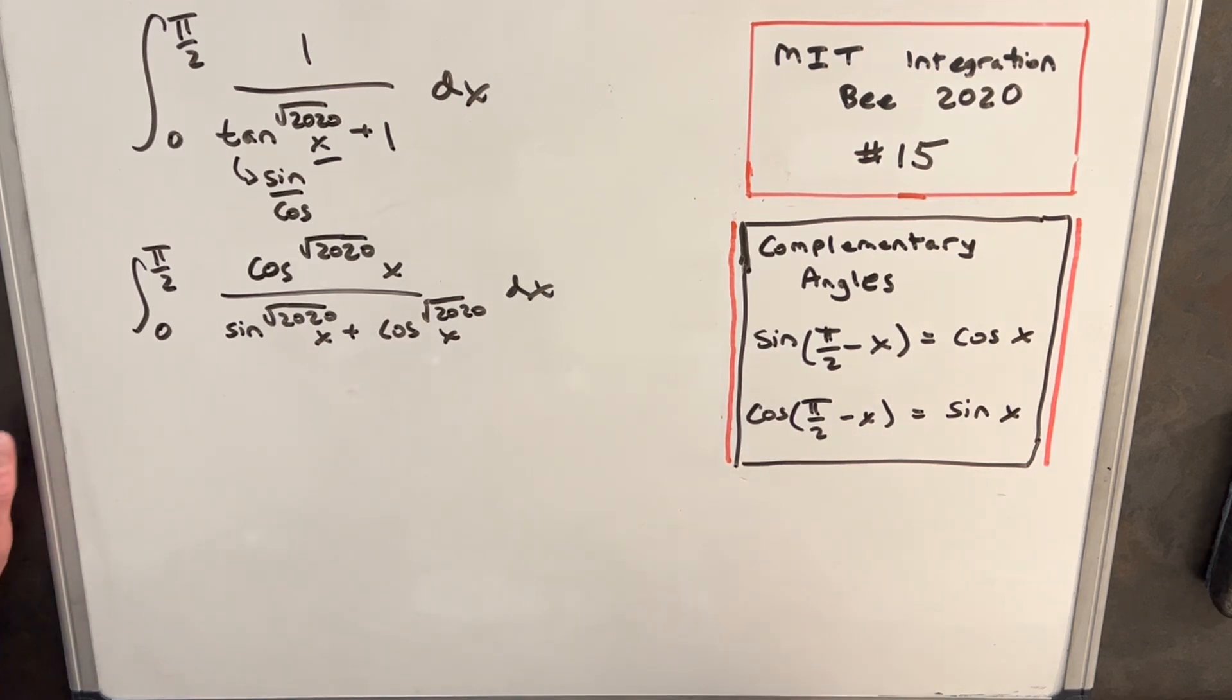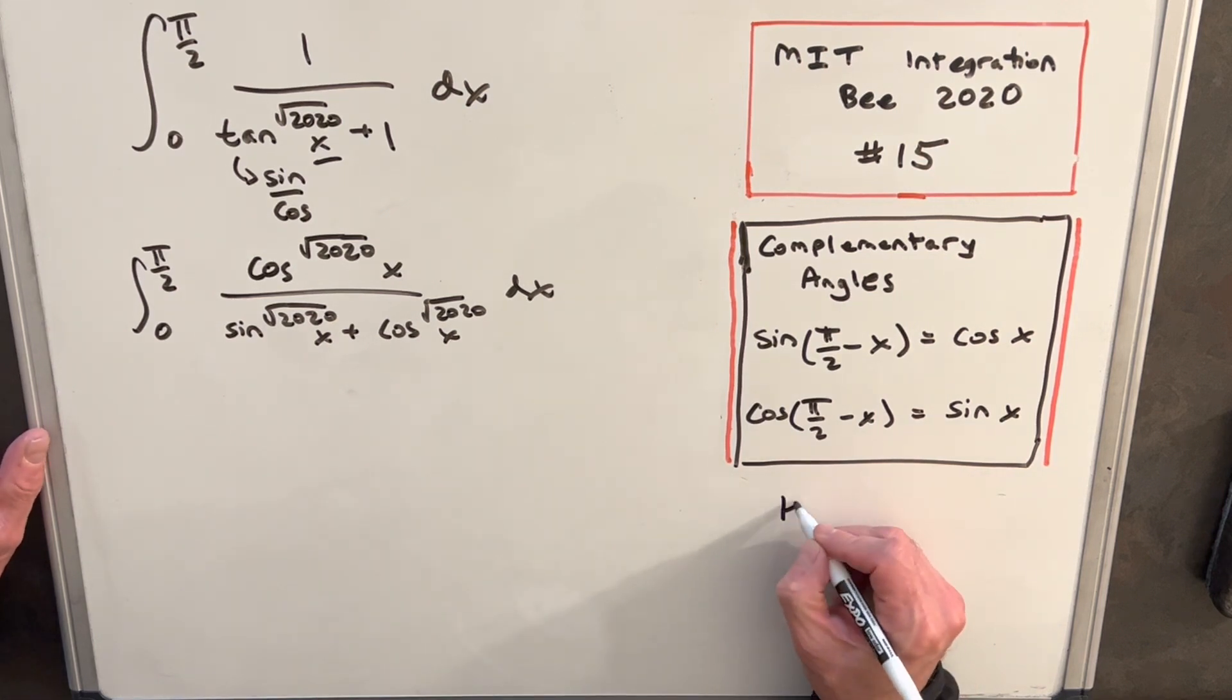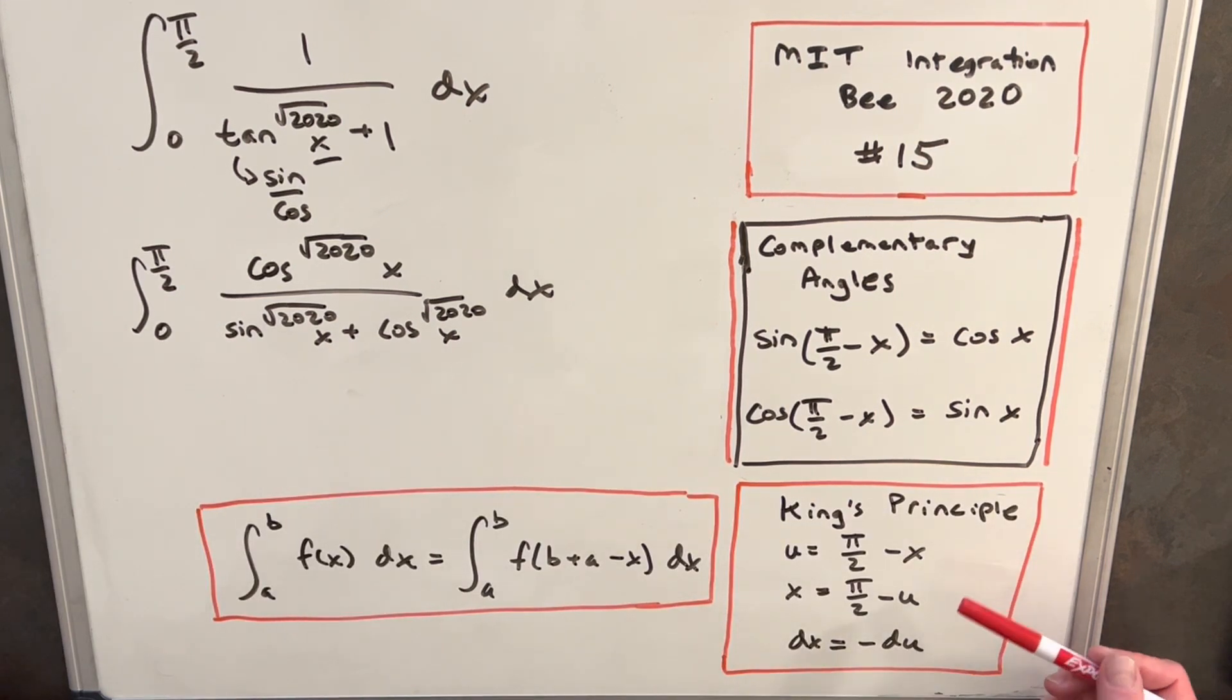The substitution we want to make for this is, let me write this down. So here's the substitution we're going to use over here on the right. We'll be substituting u equals pi over 2 minus x, and then similarly x equals pi over 2 minus u, and dx equals minus du.